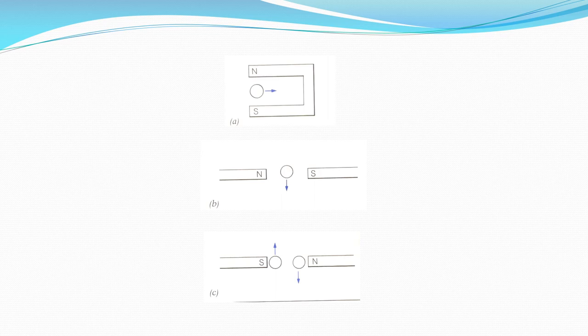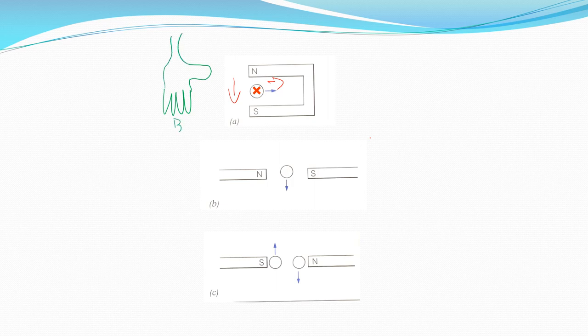Going back to earlier examples: magnetic field going that way, velocity that way — the induced current goes into the page. The hand rule shows fingers pointing down for B, thumb indicating wire motion, and the back of the hand faces you while the palm points into the screen — hence the current goes into the page.